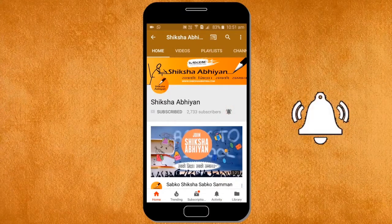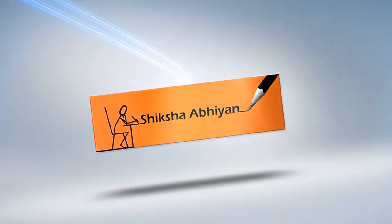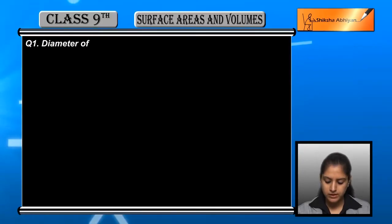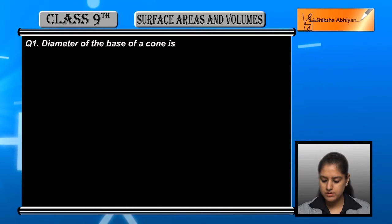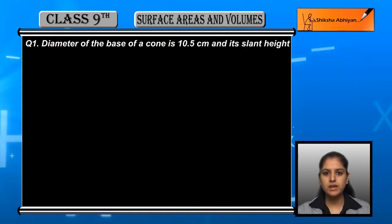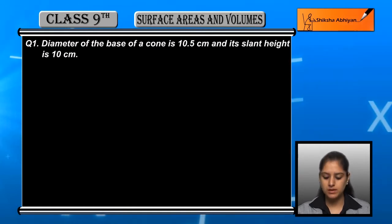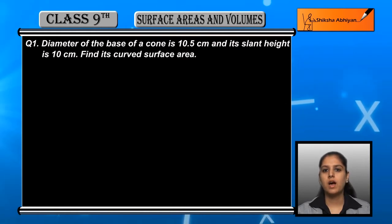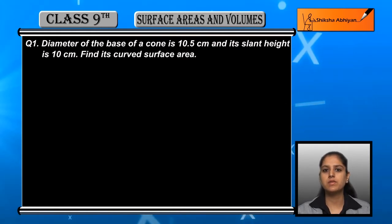Exercise 13.3, question number one: the diameter of the base of a cone is 10.5 centimeters and its slant height is 10 centimeters. Find its curved surface area. You have diameter and slant height given — find the curved surface area.